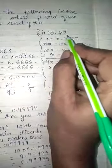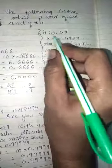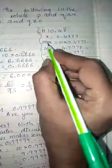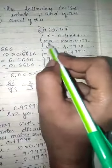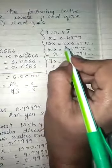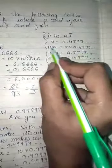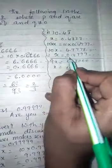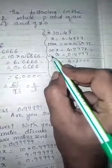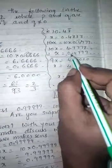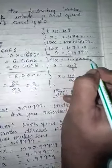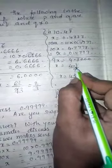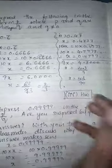Next: 0.47 bar, where the bar is only on 7. So 7 will repeat but 4 will not. Take X equals 0.4777... Since only one number, 7, is repeating, multiply 10 on both sides: 10X equals 4.7777... Write X equals 0.4777... below and subtract. 10X minus X equals 9X. The result is 4.3, so X equals 4.3 upon 9. Removing the decimal — one digit after decimal — multiply numerator and denominator by 10 to get 43 upon 90.